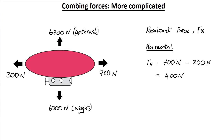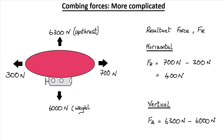If we consider the resultant force in the vertical direction, we have an upthrust of 6,300 newtons acting upwards — that's the positive direction — and the weight of 6,000 newtons acting downwards, that's in the negative direction. So that's a resultant force of 6,300 minus 6,000 newtons, giving a resultant force of 300 newtons upward.